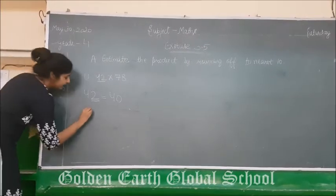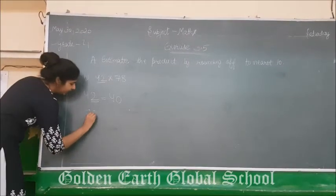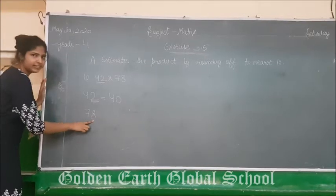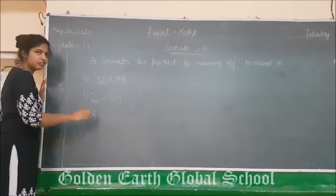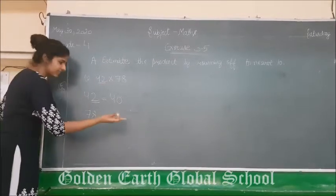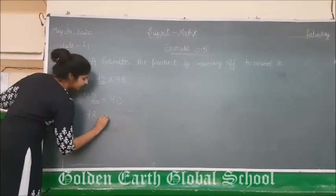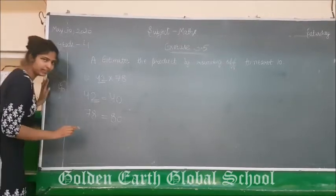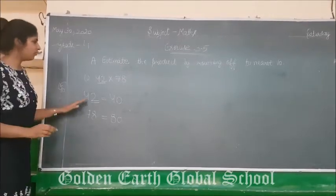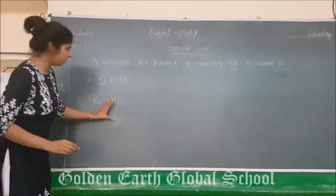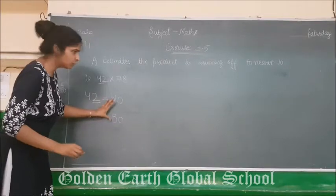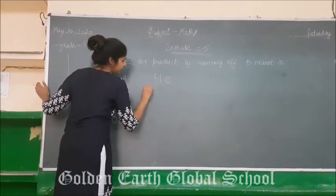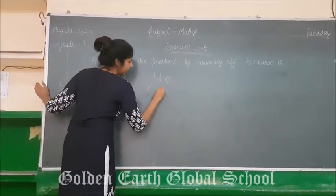Similarly, for 78: 8 is greater than 5, so we will shift to the next 10. The next 10 is 80. Clear? Now we have to multiply these two numbers: 40 multiplied by 80.